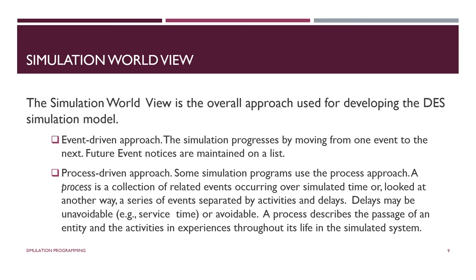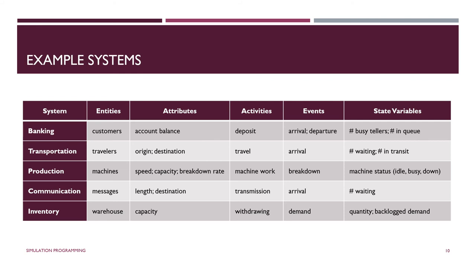When you are working in Arena or Clouds, you're working in the process-driven approach. To build a simulation model of a banking system, you identify the entities, attributes, activities, events, and state variables. The entities are the customers — the objects we observe moving through the system. A customer has an attribute such as account balance. An activity might be a deposit. The events are the arrival event and the departure event, which happens when customer service is complete. State variables could include the number of customers in the queue and the number of tellers that are busy.